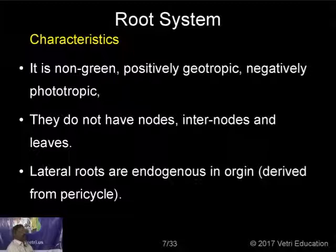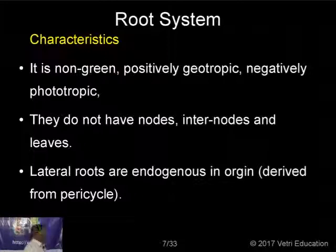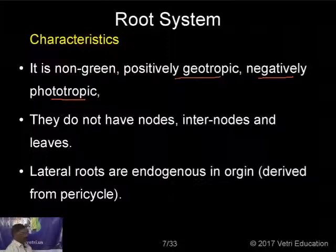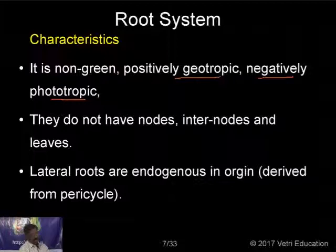What are the characteristics of a root? The root is generally brown in color, not green, since it is in the ground. It is positively geotropic and negatively phototropic — it grows away from light and towards gravity. Roots do not have nodes and internodes. Lateral roots are endogenous in origin, meaning they develop from inner layers of tissue — specifically from the pericycle. This is called endogenous development. If they developed from epidermal cells, it would be called exogenous. The development of branches and leaves is exogenous, but lateral roots are endogenous.